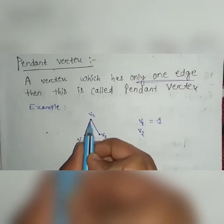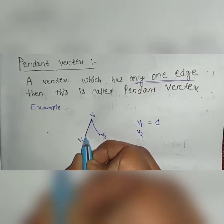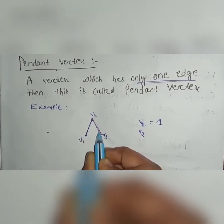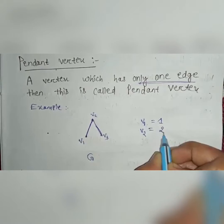V2 has how many edges? From V2, this is one edge, this is another edge. So number of edges is 2.